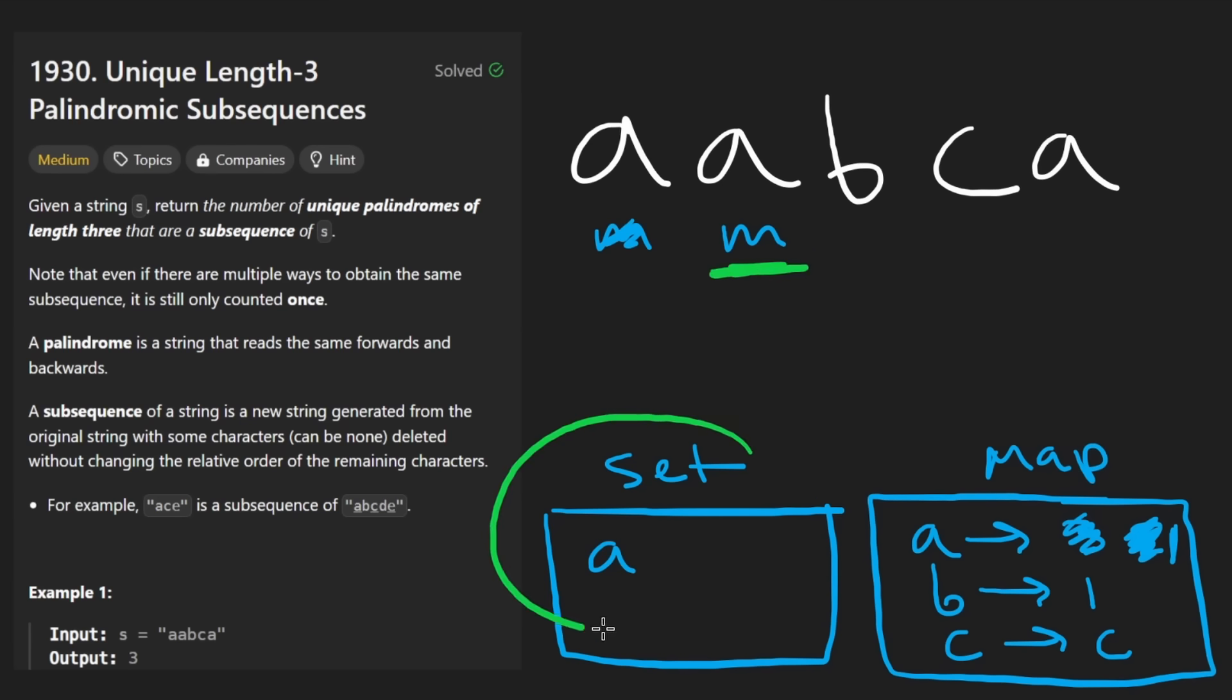And now that we've removed this from the right side, we can decrement the count of A by one. It'll be one. I know this is a little bit hard to read. So now to count the palindromes where this is the middle character, we go through every character on our left side and check. Does this character also exist in the map on the right side? And in fact, it does. We have an A here and an A here. So we counted one palindrome.